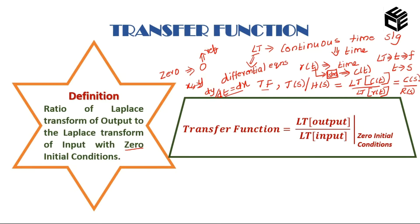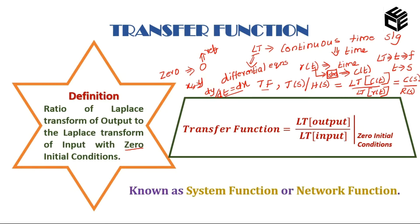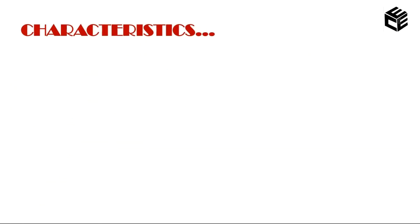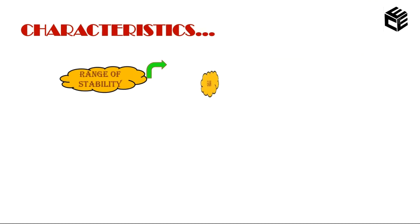The other name of transfer function is system function or network function. It is applicable only for a single input single output system — that is, a SISO system — where R is the input and C is the output. Now, the characteristics of transfer function: it is used to identify the stability of the system and the range of stability of the system.